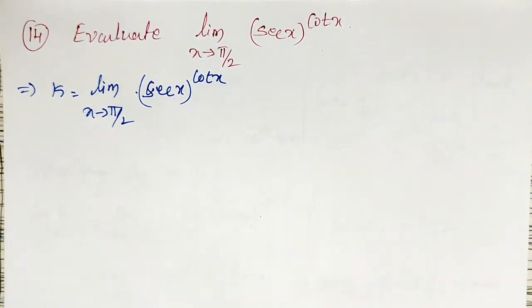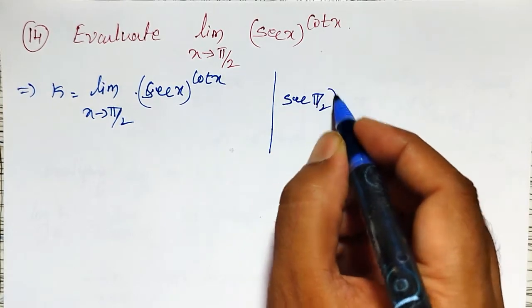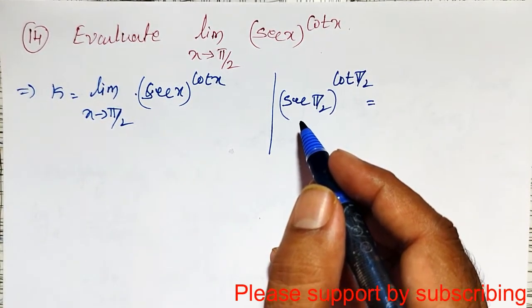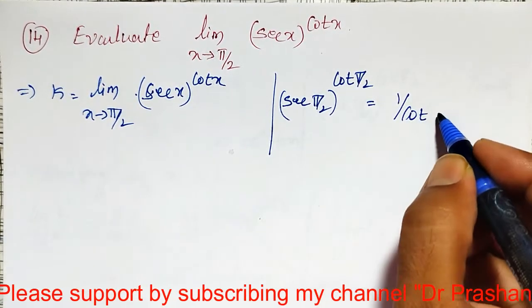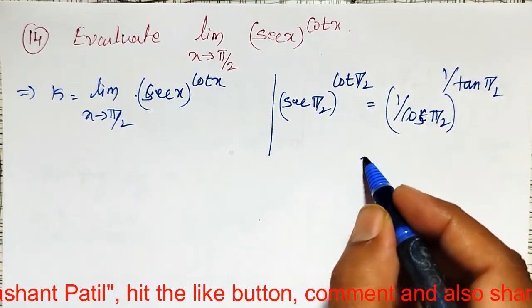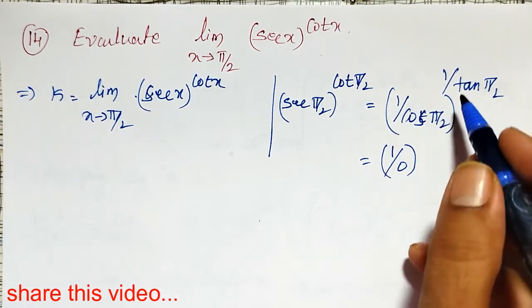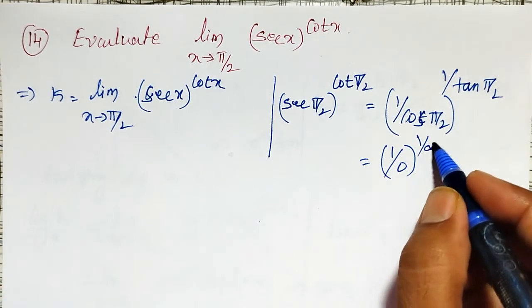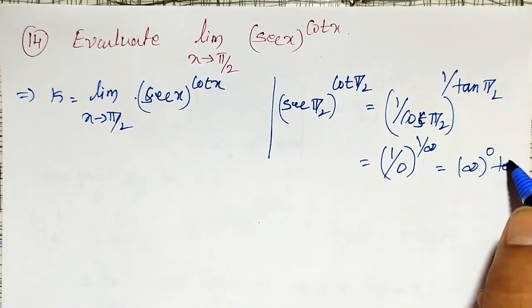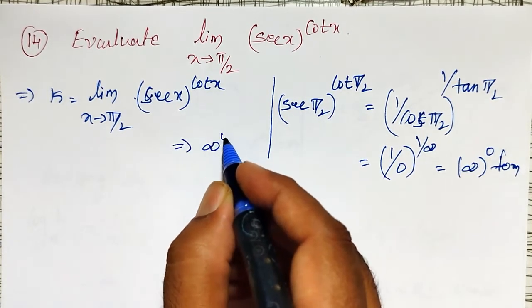Let me check whether we get a finite value or infinite value. Substituting x equal to pi by 2: secant pi by 2 raised to cot pi by 2. Secant is 1 by cos, so 1 divided by cos(pi/2). Since cos(pi/2) = 0, secant(pi/2) = 1/0, which is infinity. And cot(pi/2) = 1 by tan(pi/2) = 1 by infinity = 0. Therefore, I am going to get the indeterminate form infinity raised to 0.